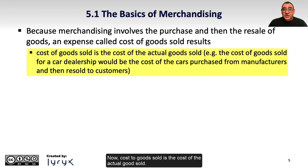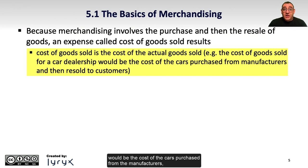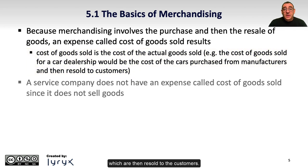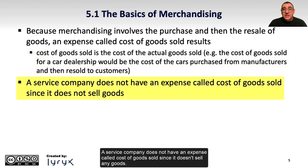Cost of goods sold is the cost of the actual goods sold. For example, the cost of goods sold for a car dealer would be the cost of the cars purchased from the manufacturers, which are then resold to the customers. A service company does not have an expense called cost of goods sold, since it doesn't sell any goods.